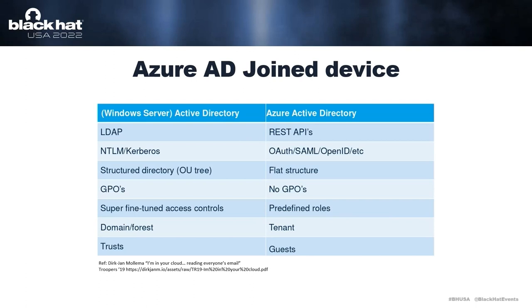The main two differences between on-prem Active Directory joined and Azure Active Directory joined are: first, how you query the organization — in Active Directory you mostly use LDAP to query the domain controller, while in Azure Active Directory you mostly use Graph API or REST API calls. The second difference is authentication protocols — in Active Directory the protocols are NTLM and Kerberos, while in Azure Active Directory they are SAML, OAuth, OpenID, and NegoX, which will be our main topic today.